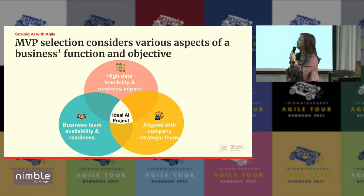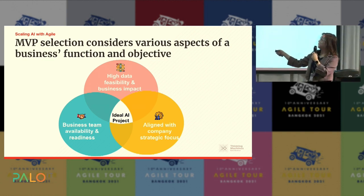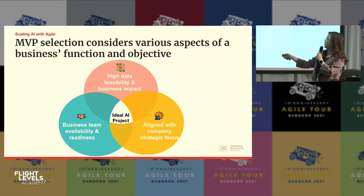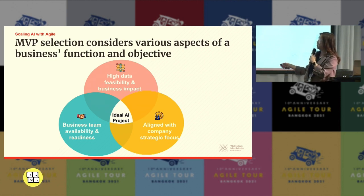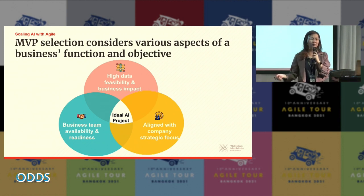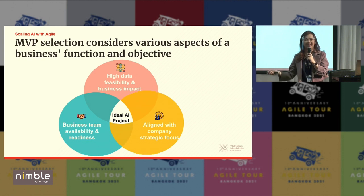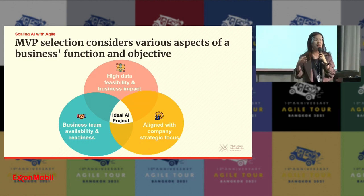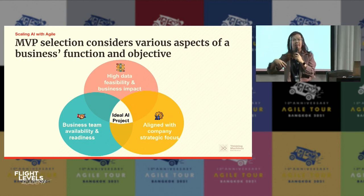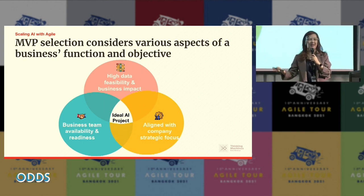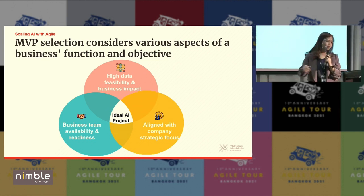Another important angle is checking business team availability. If they're not available, don't want to talk to you, or won't give you data, then don't do it — same as Agile Scrum projects. Make sure the use case is aligned with your company's strategic focus: if the company wants to save costs, build a model that automates and cuts costs; if they want to drive sales, build a model that drives sales. Don't just build something because you have data and think it's a cool model.